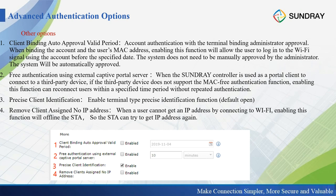The second option is Free Authentication Using External Captive Portal Server. This is for when the controller acts as a portal client connecting to a third-party device. If that third-party device doesn't support MAC-free authentication, we can enable this function on our controller so users aren't repeatedly prompted for authentication within a specific time. The third option is Precise Client Identification, which is enabled by default and allows the controller to identify what kind of device is connected to the SSID.